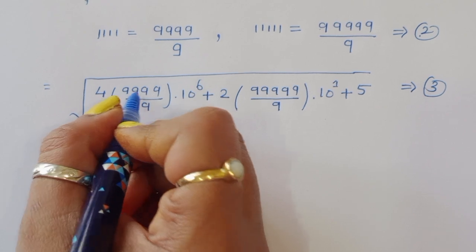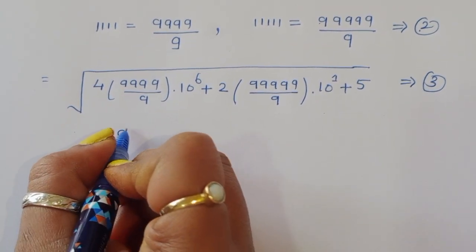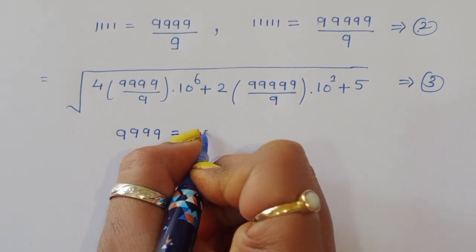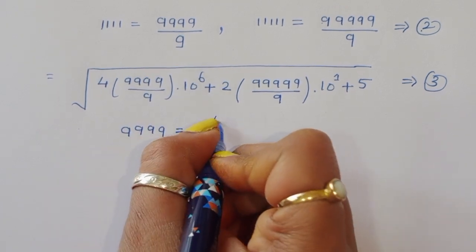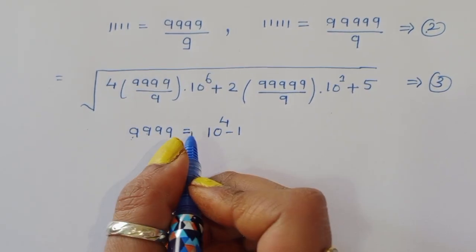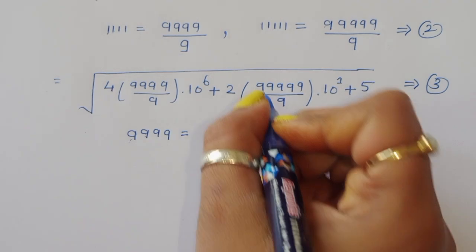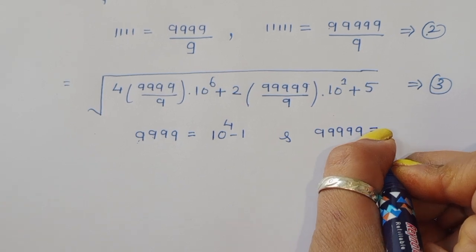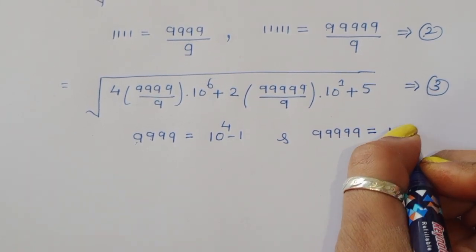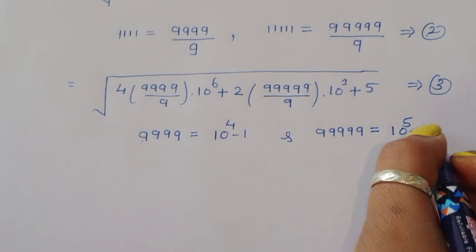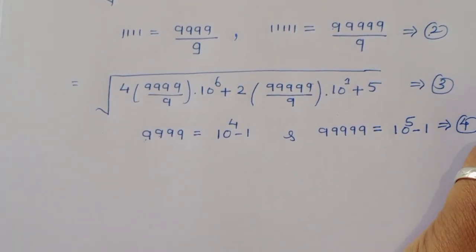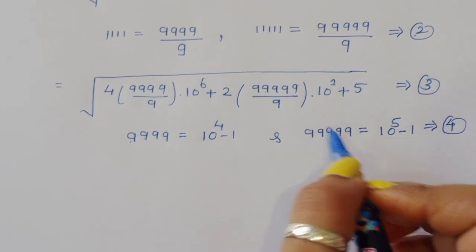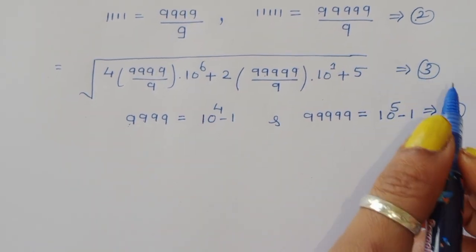Now we know that 9999 equals 10^4 minus 1, and 99999 (five 9s) equals 10^5 minus 1. This is equation number 4. We now substitute equation 4 into equation 3.